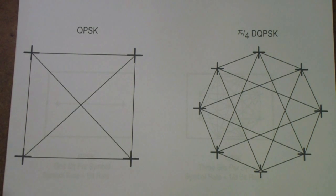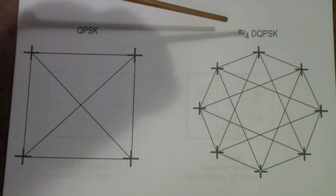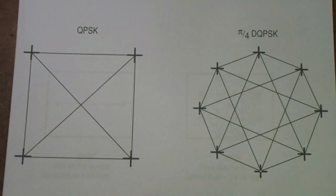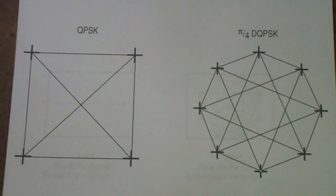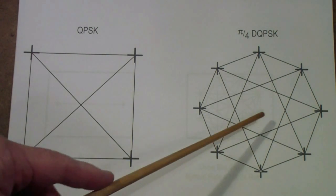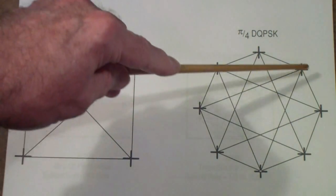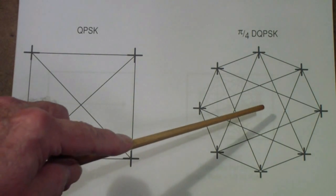I mentioned earlier that we would like to avoid having transitions go through the origin. This is a QPSK signal. There is a technique known as pi over 4 (that's 45 degrees) differential quadrature phase shift keying—often called pi over 4 DQPSK. Notice that no symbol transition goes through the origin. However, you do need more symbols available. So the downside is more symbols; the upside is no transitions through the origin.